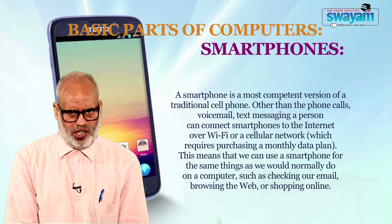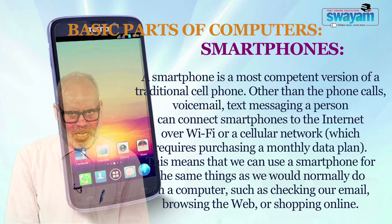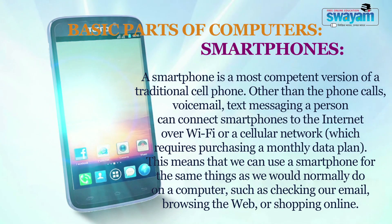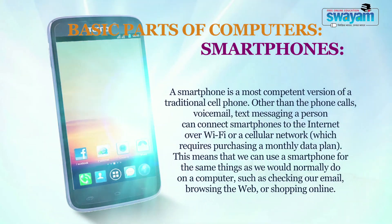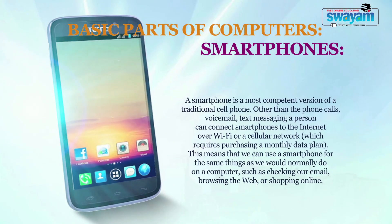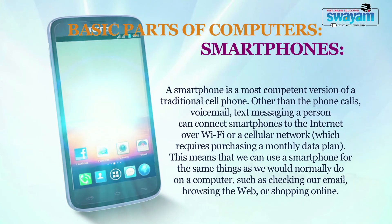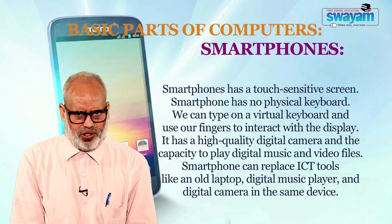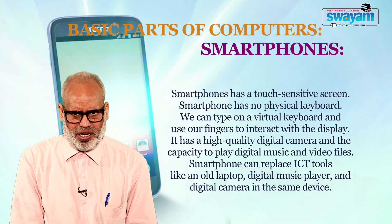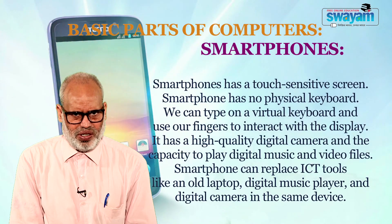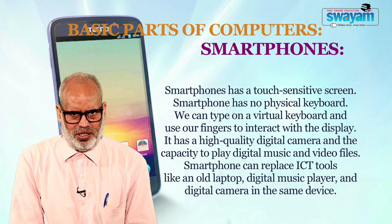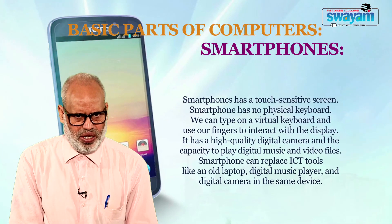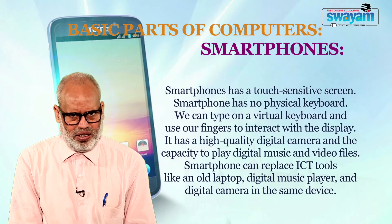A smartphone is the most capable version of a traditional cell phone, offering voice calls, voicemail and text messaging. A person can connect a smartphone to the internet over Wi-Fi or a cellular network, which requires purchasing a monthly data plan. This means we can use a smartphone for the same things as a computer, such as checking email, browsing the web or shopping online. A smartphone has a touch-sensitive screen with no physical keyboard; we type on a virtual keyboard. It has a high-quality digital camera and the capacity to play digital music and video files. Smartphones can replace ICT tools like an old laptop, digital music players and digital cameras in a single device.